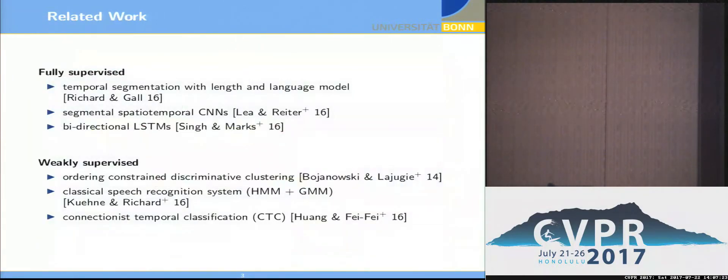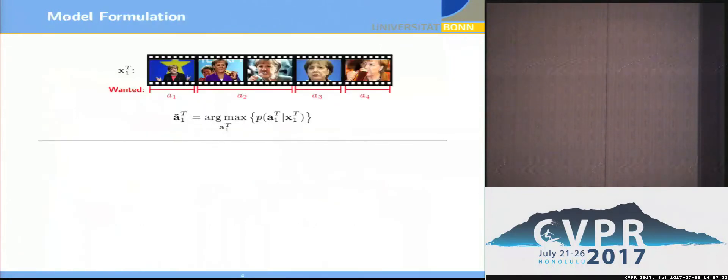For the fully supervised approach, one could simply say we use deep learning networks, and there are already some methods that did this. For the weakly supervised approaches, it's a bit different, and most methods borrow ideas from speech recognition. For example, this second part is a classical speech recognition system consisting of a hidden Markov model and a Gaussian mixture model. The third work here is an extended version of CTCs, so basically a recurrent network-based method, and in our work we basically combine components of both of these.